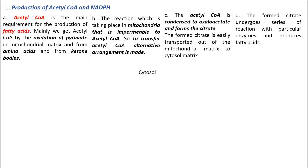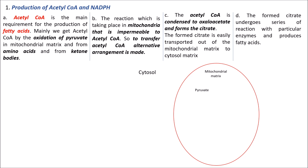In the cycle diagram, we look at two parts: the cytosol matrix and the mitochondrial matrix. In the mitochondrial matrix, pyruvate is directly converted into acetyl coenzyme A in the presence of the enzyme pyruvate dehydrogenase. Since the mitochondrial matrix is impermeable to acetyl coenzyme A, it cannot exit freely. Therefore, a condensation reaction takes place between acetyl coenzyme A and mitochondrial oxaloacetate.